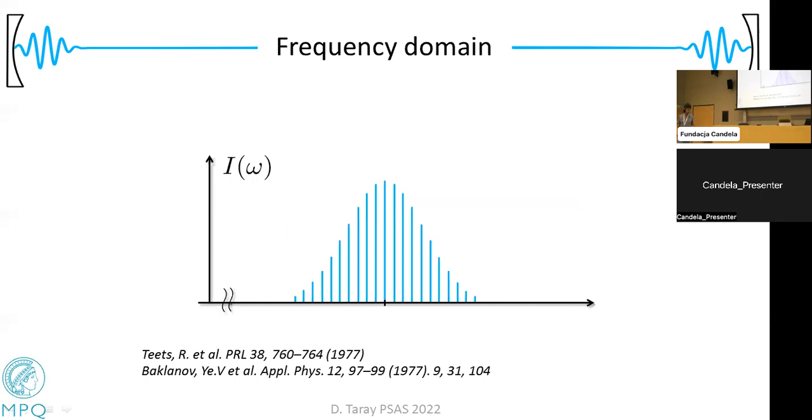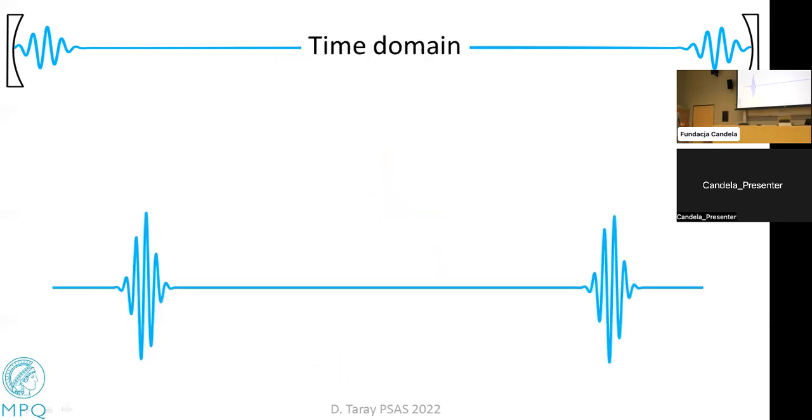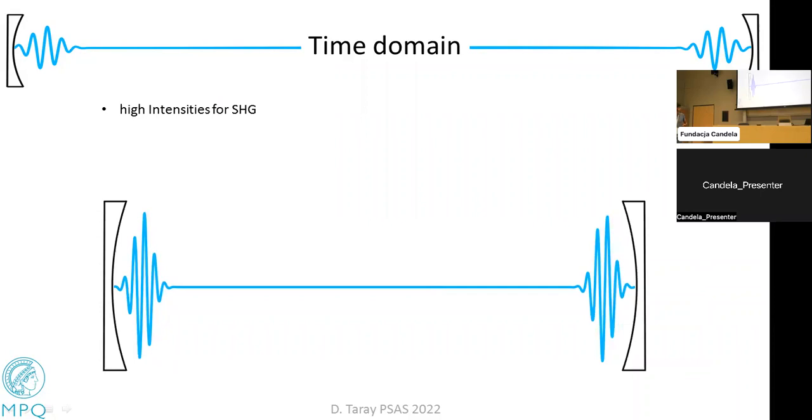Let's start with the experimental technique we're using. Here you see a sketch of the spectrum of the frequency comb. We have this very broad envelope with very narrow modes underneath. In our case, we are using a comb that has a width of roughly 150 gigahertz. We want to make one of these modes resonant with exactly half of the transition frequency. This means we need a frequency comb at 205 nanometers. This is a picture of the same laser in the time domain, so it's a pulsed laser with a fixed spacing between these pulses. This pulsed nature of the laser enhances our second harmonic generation efficiency.